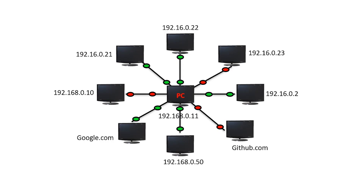This is my PC. Here we have different public domains and private IPs. My PC will ping those IPs. If it is communicating, then it is online, so it shows in green color. If they are not communicating, then they are offline, so it shows in red color.